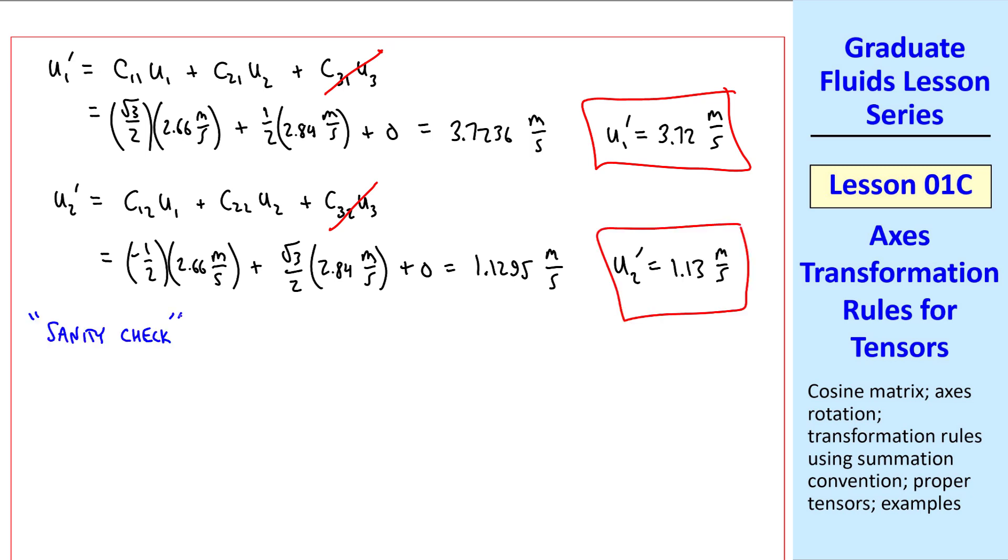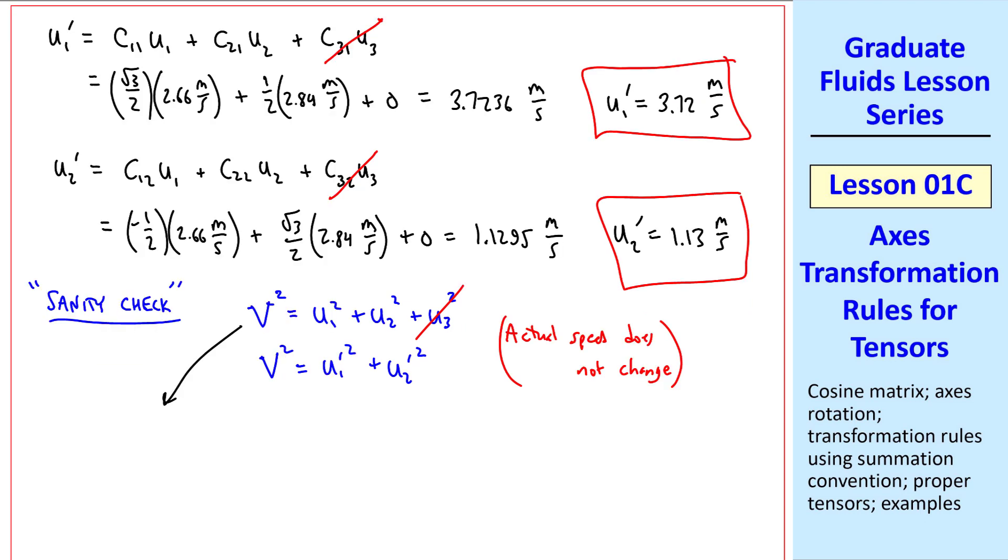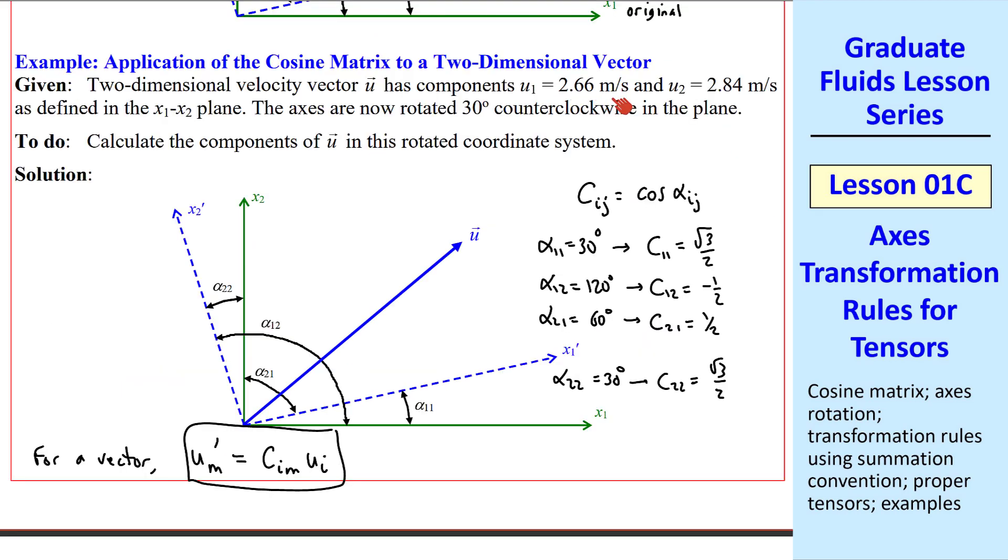I always like to do what I call a sanity check. The speed squared, or the magnitude of the velocity squared, is the sum of the squares of all its components. In this case, u3 is 0. In our transformed coordinates, we must also have the same equation. In other words, the same speed. The actual speed does not change when we change coordinates. Let's check this. In our original coordinates, I get 15.14 meters squared per second squared. And in my transformed coordinates, I also get 15.14 meters squared per second squared. To four digits, these agree. But our answers are good only to three digits, since the given information had only three digits.